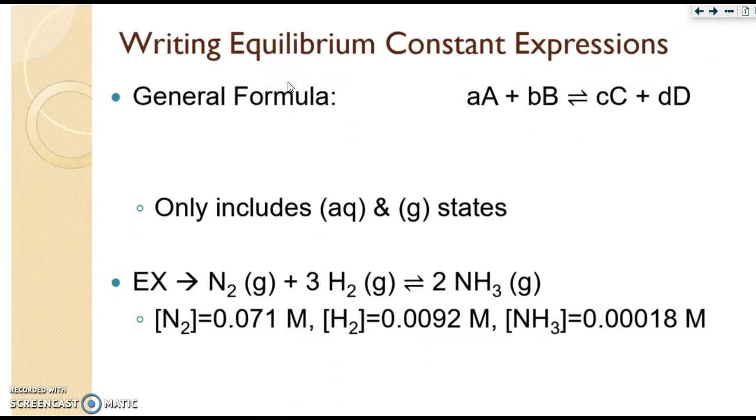Let's talk about how to write out equilibrium constant expressions, as well as how to calculate them. An equilibrium expression is represented with a K, and often it's written with a K and a little EQ. That EQ stands for equilibrium. Overall, the general formula is this. So KEQ is always products over reactants. Okay, so products over reactants. They also only include the aqueous and the gas states. So no solids or liquids.